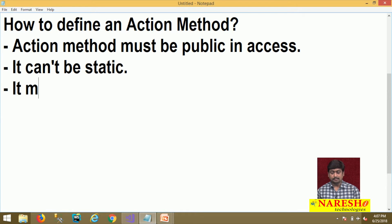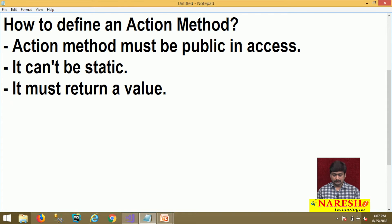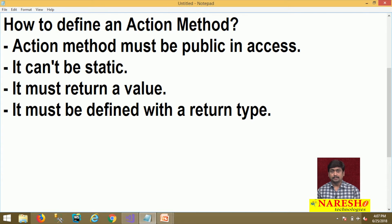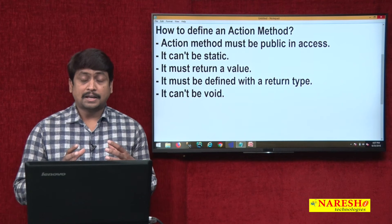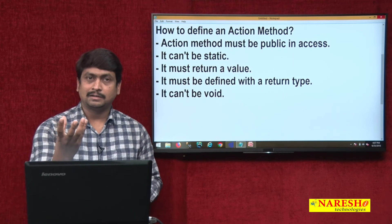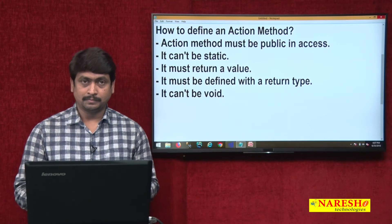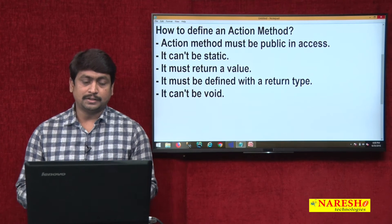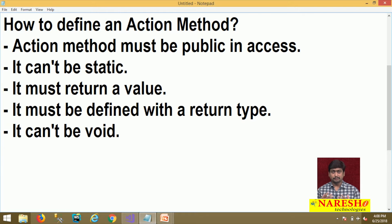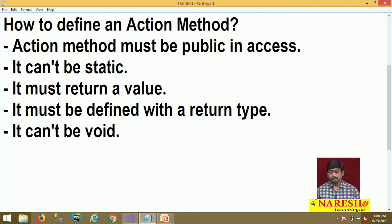Another important rule: a controller action method must return a value — it must be defined with a return type. That means it cannot be void. The main intention of an action method is to return a response whenever a client makes a request, so how can it return a response if it has no return type? It is mandatory that every controller action method must be defined with a return type and cannot be void. We will discuss the various return types at a later stage.